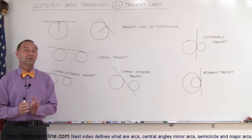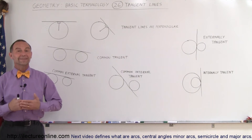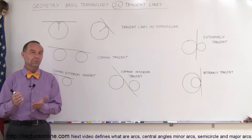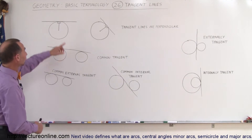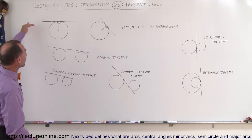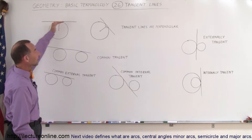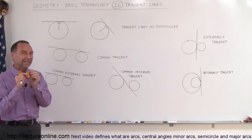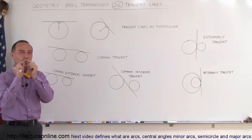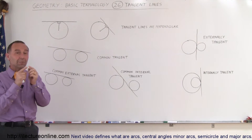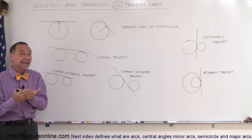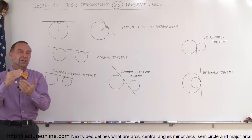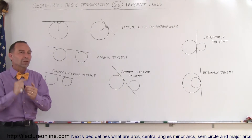Welcome to Electron Line. In this video we're going to talk about tangent lines, especially when it refers to circles. Here we have a circle, and whenever we draw a line that's tangent to the circle, which means that the circle and the tangent line have one point in common where they touch, or another way of saying that is that the tangent line intersects the circle at one point.